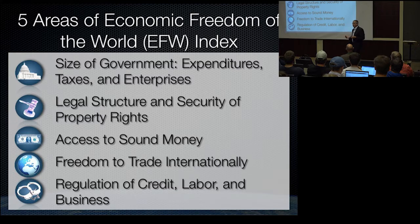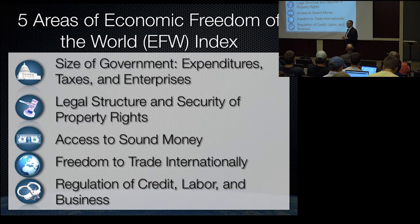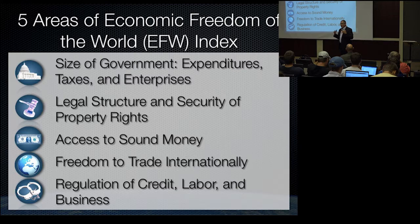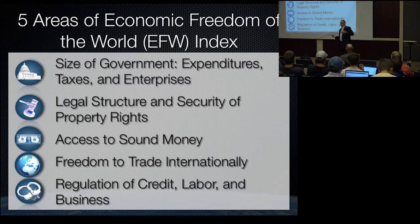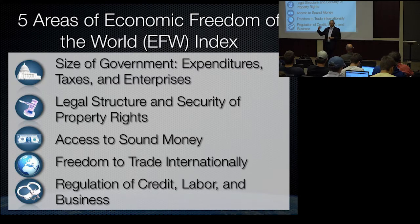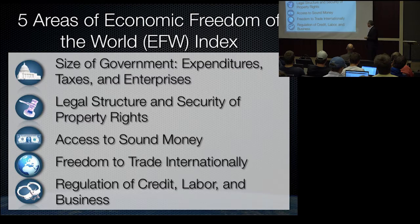The fourth area is the one Adam Smith is probably most famous for — he was a free trader. This crazy Scotsman had the audacity to argue, in 18th century Britain, that they should trade freely with the French. That was an absolutely crazy argument in his era — the French were bitter enemies, and England had been fighting wars with France for hundreds of years. He argued for no tariffs, no quotas, no restrictions on trade. So here we have measures of tariffs, quotas, and other restrictions, mostly from the World Bank and IMF. Countries with no tariffs get a good score; high tariffs get a low score in area four.